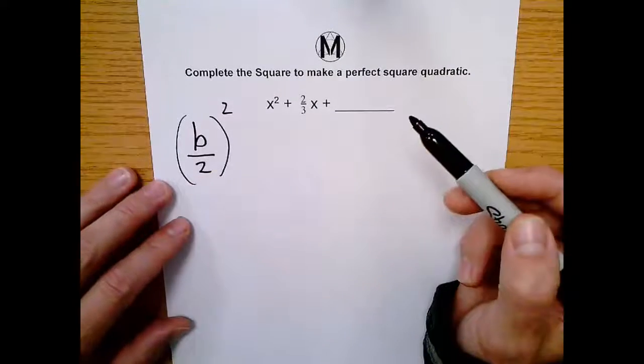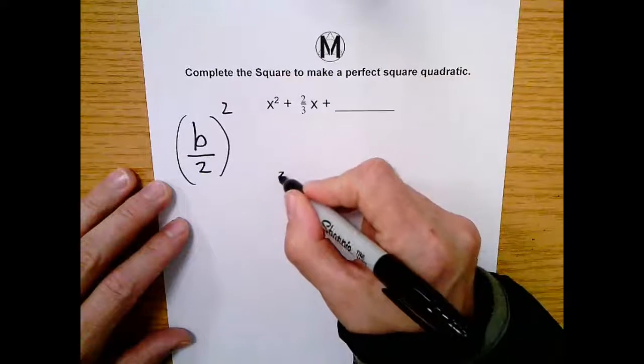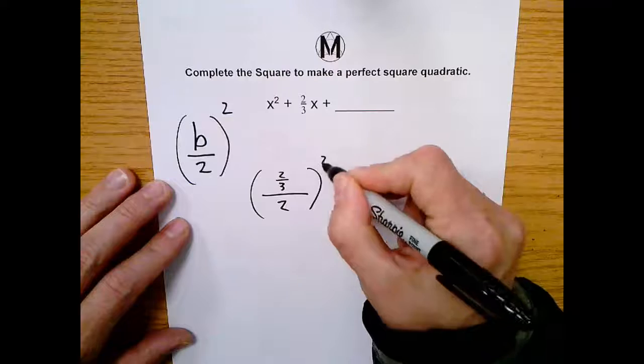So looking at this, my b value is 2 over 3. So if you just filled this in, you would get 2 over 3 divided by 2 squared.